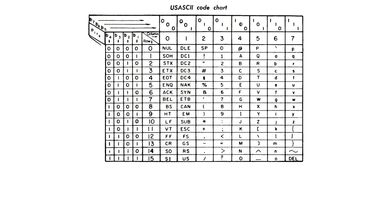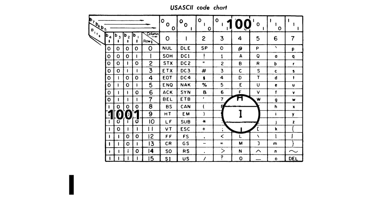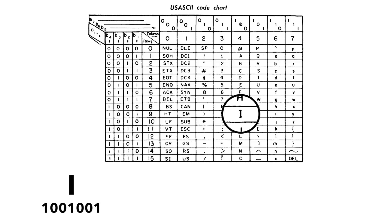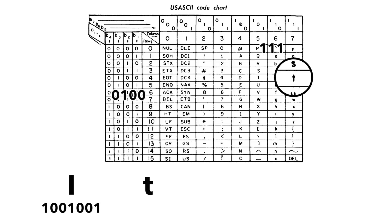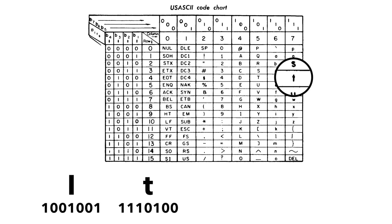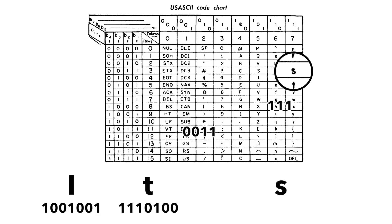As telegraph systems became automated, teletext machines used exclusively binary encodings, because while Morse can be easier for humans to use, machines work really well with binary. In 1963, AT&T began to use a new standard called ASCII, the American Standard Code for Information Interchange. Think of this as the periodic table of ASCII. Each character is represented by seven bits. So capital I is 1001001, T is 1110100, S is 1110011.